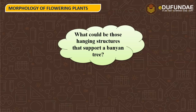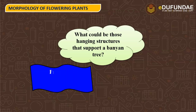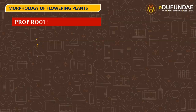We discussed about storage roots. Next, we will discuss about supportive roots. You have seen the banyan tree — it has hanging structures. These are called prop roots and pillar roots. The horizontal branches of the stem of the plant give rise to aerial roots.